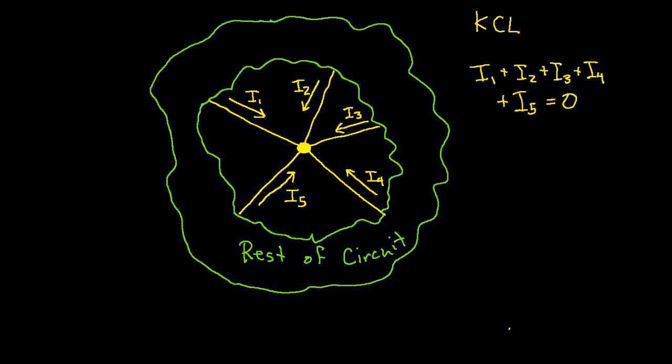Now some of you may look at this and say, how can you have the sum of all currents entering the node be zero? Well, what it means is that some of these currents will be negative and the way we've drawn the arrows won't show how all the currents are going to flow. In other words, some of the currents will flow out of the node in the direction opposite the arrows.